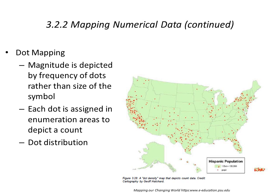Here's another example of dot mapping showing the distribution of population in the U.S. — in this case, the number of Hispanics, where one dot equals 100,000 people. It appears the county boundaries have simply been removed from this map, or it is symbolized at the state level where dots are randomly assigned within those state boundaries.